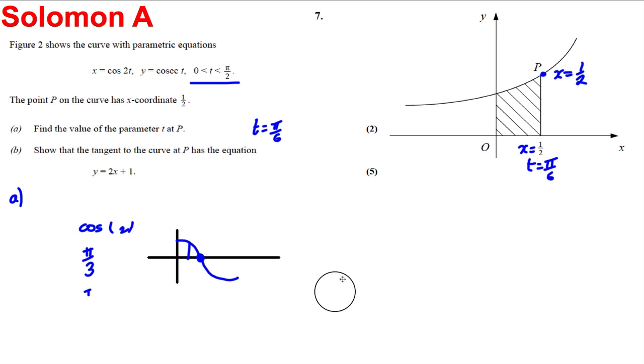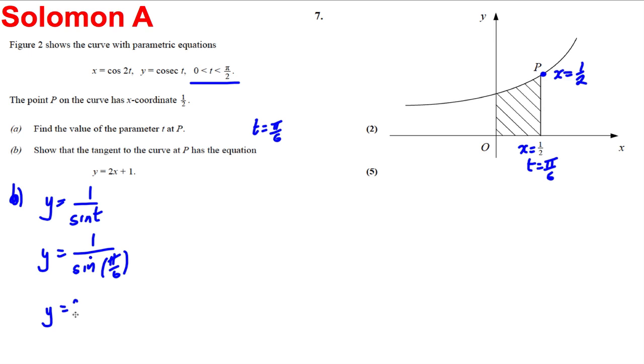Next part. Show that the tangent to the curve at P has the following equation. Well, we know the x value there. Let's find the y value. y is equal to cosec t, which is 1 over sine t. So y is going to be equal to 1 over sine of pi by 6, which is 1 over half, which is equal to 2. So here y is 2.